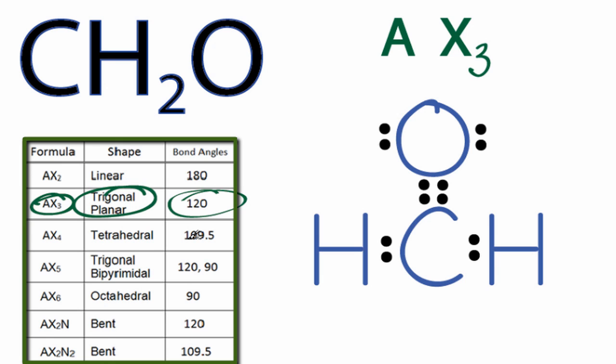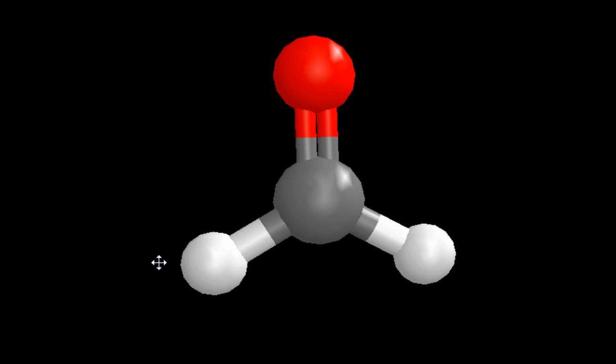Let's look at the trigonal planar molecular geometry for CH2O in three dimensions. Here, the oxygen's red. The carbon in the center, that's the gray or black, and then the hydrogens are white.